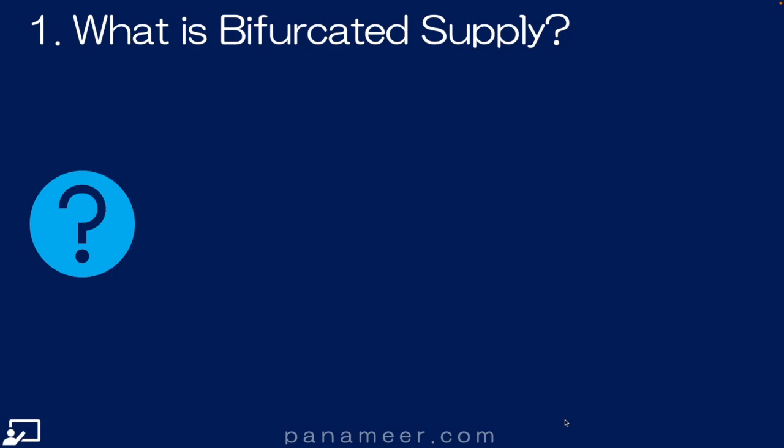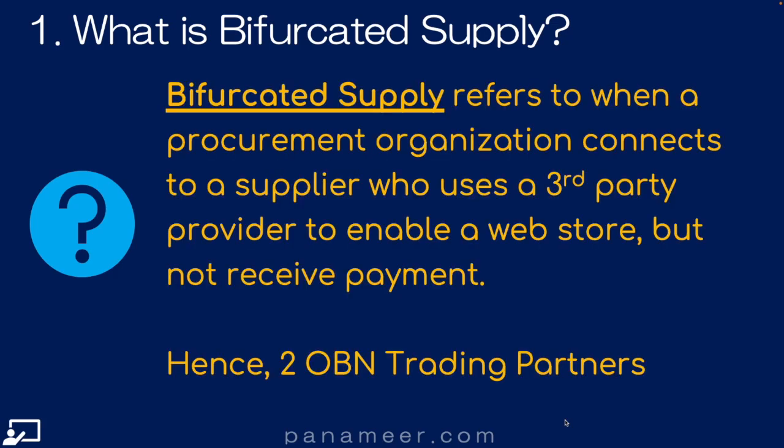Slide one: What is the bifurcated supply model? Bifurcated supply refers to when a procurement organization connects to a supplier who uses a third-party provider to enable a web store, but not receive payment. Hence, two OBN trading partners are needed. Click the link above to watch a quick video detailing each of the buyer-supplier touch points as well as the best practice options for enabling or integrating each.